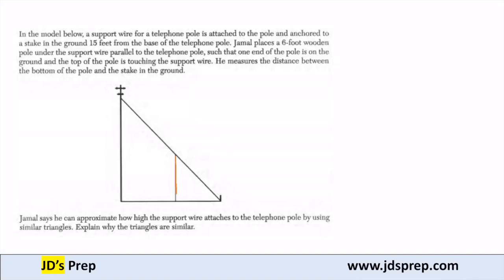So here's his support wire here. Or that's his, I'm sorry, wooden pole. Such that one end of the pole is on the ground, and the top of the pole is touching the wire. So here's our wire. He measures the distance between the bottom of the pole and the stake in the ground.